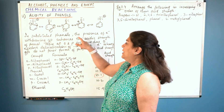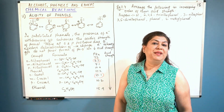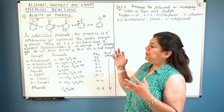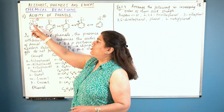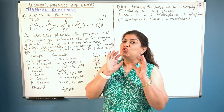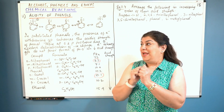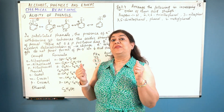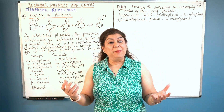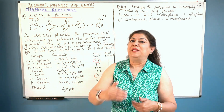In substituted phenols, the presence of an electron withdrawing group enhances the acidic strength. Whenever there is an electron withdrawing group, the negative charge moves towards the ring and moves around in the ring. Anything that pulls negative charge towards the ring will help the acidic character, because that will make the phenoxide ion more stable and make it easier for the electrons to come into the ring and participate in resonance.